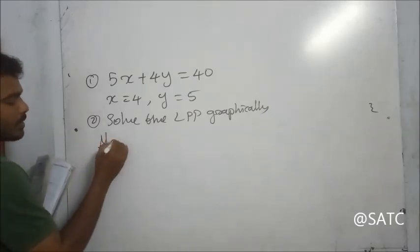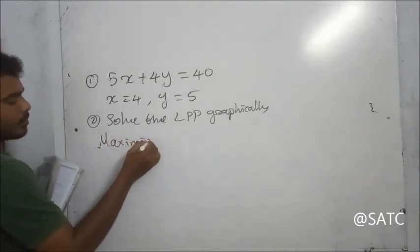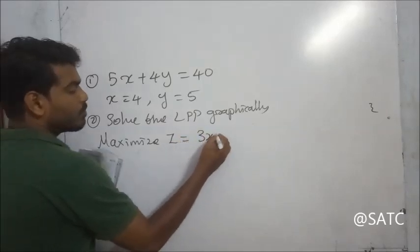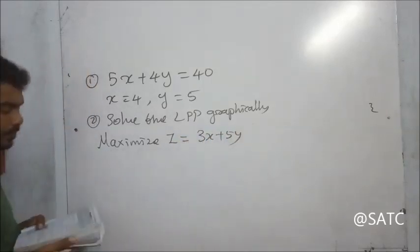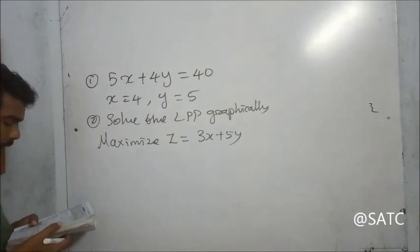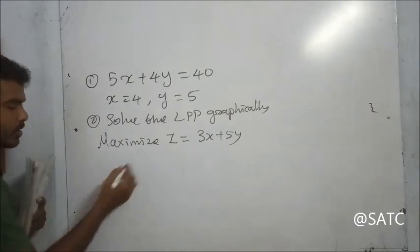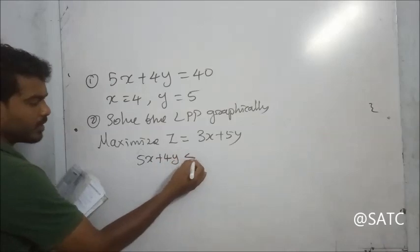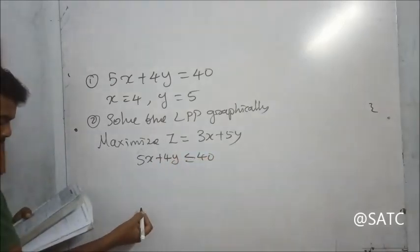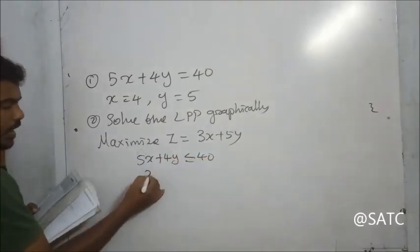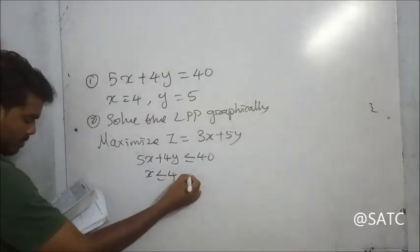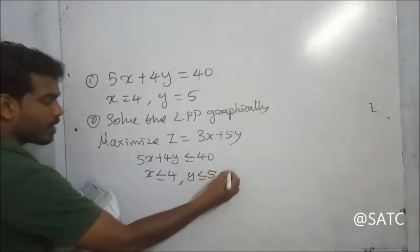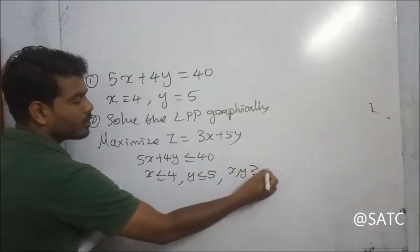Maximize Z equal to 3x plus 5y, subject to the conditions: 5x plus 4y less than or equal to 40, x less than or equal to 4, y less than or equal to 5, and x, y greater than or equal to 0.